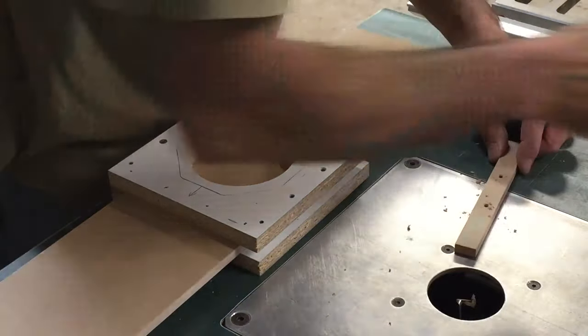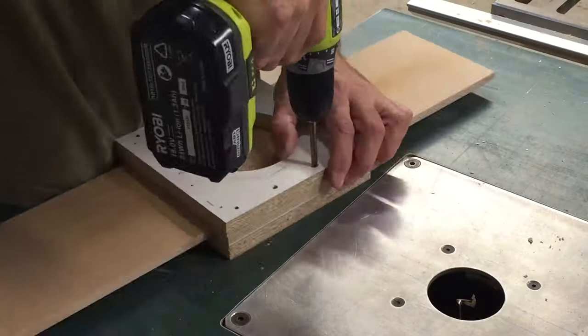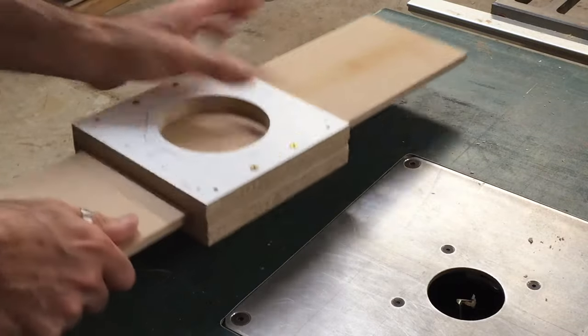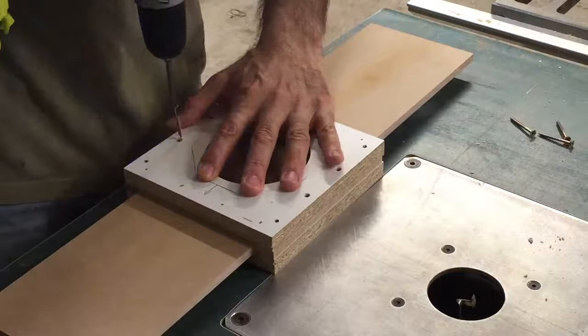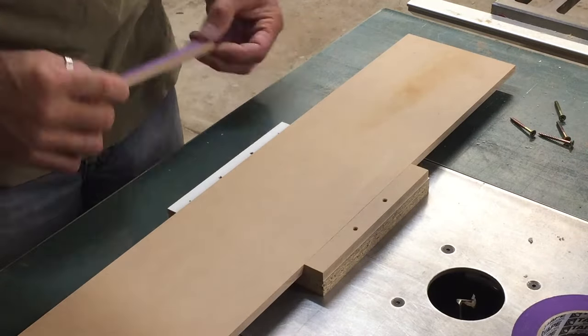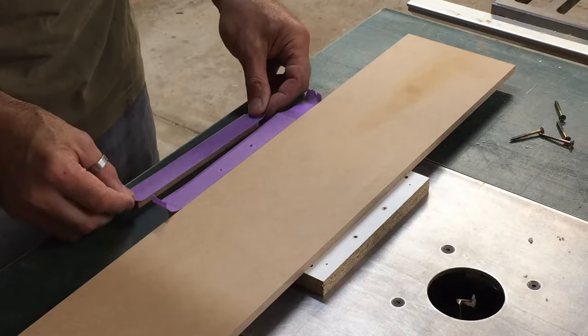So after screwing the two halves together, I found that the slider was actually jammed in between the two plates. So what I needed was a tiny little bit of clearance, and the way I got that was just with one thickness of masking tape on each side.